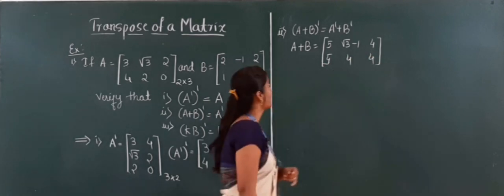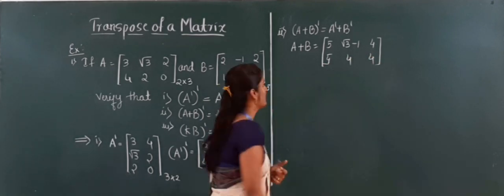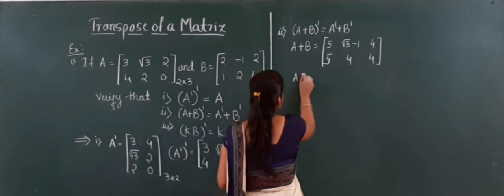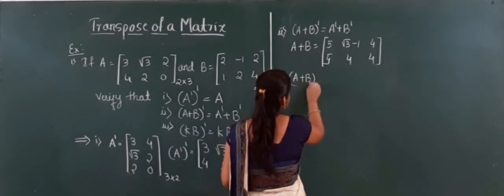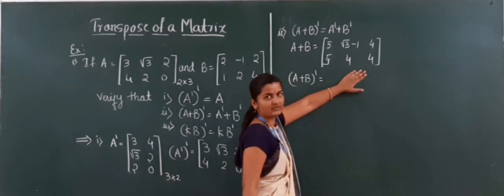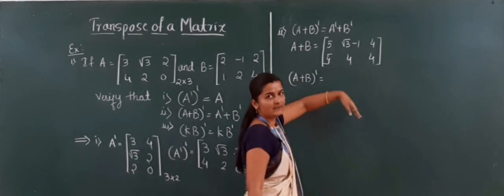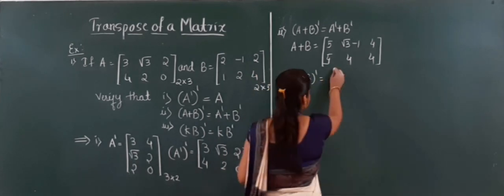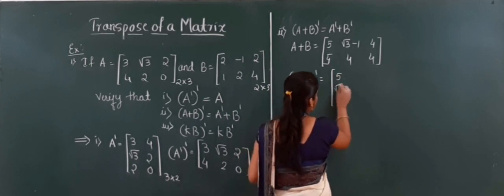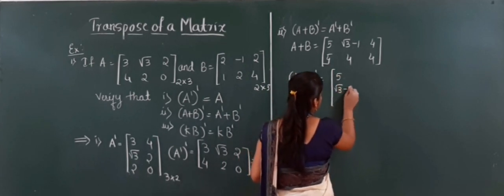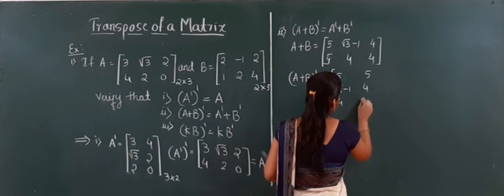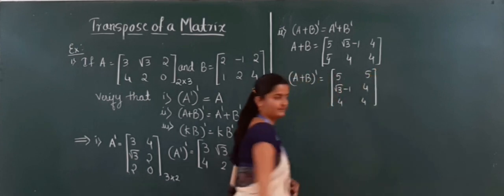Now I find (A + B) dash — the transpose of A plus B — by writing rows as columns. The first row 5, root 3 minus 1, 4 becomes the first column, and so on.